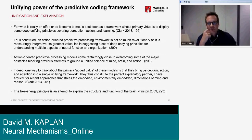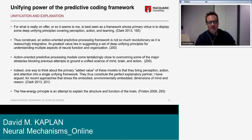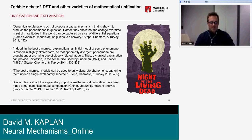An action-oriented predictive processing framework is not so much revolutionary as reassuringly integrative — its greatest value lies in suggesting deep unifying principles for understanding multiple aspects of neural function and organization. Another quote: one way to think about the added value of these models is that they bring perception, action, and attention into a single unifying framework, making them the perfect explanatory partner for approaches stressing embodied, environmentally embedded dimensions of mind.